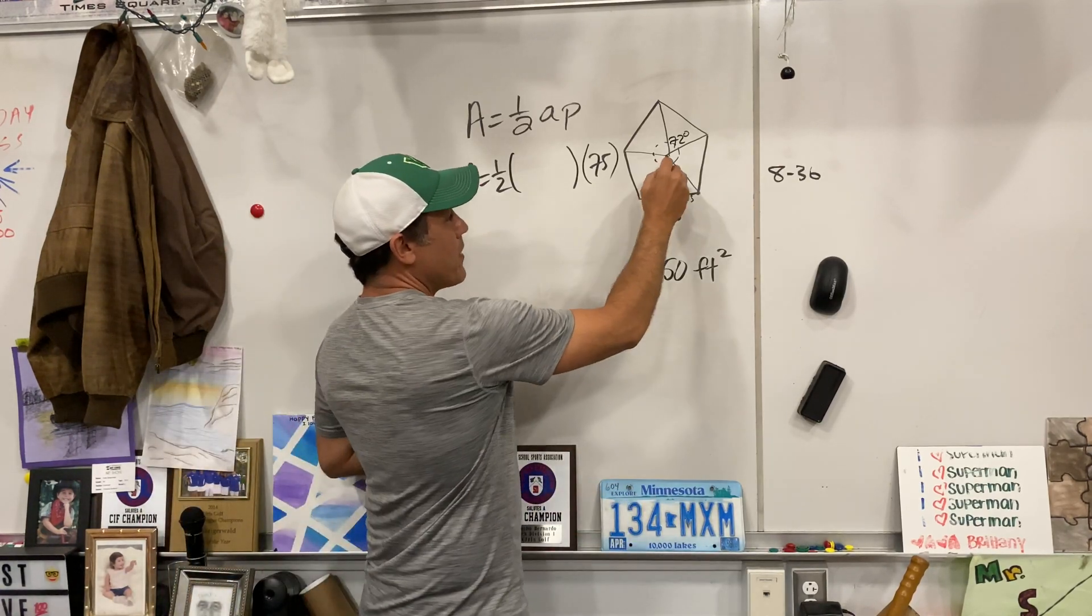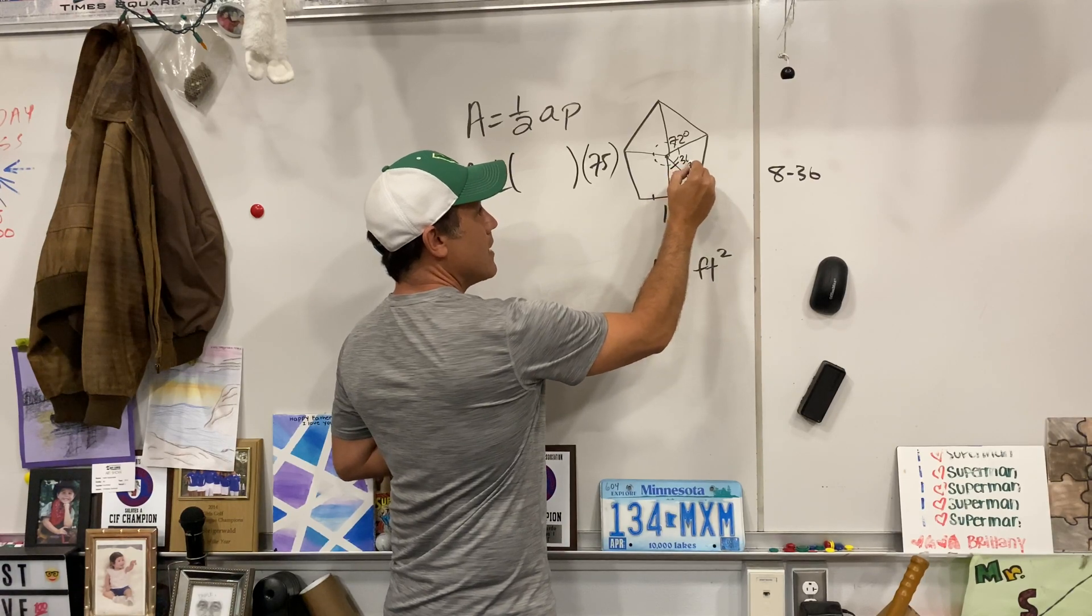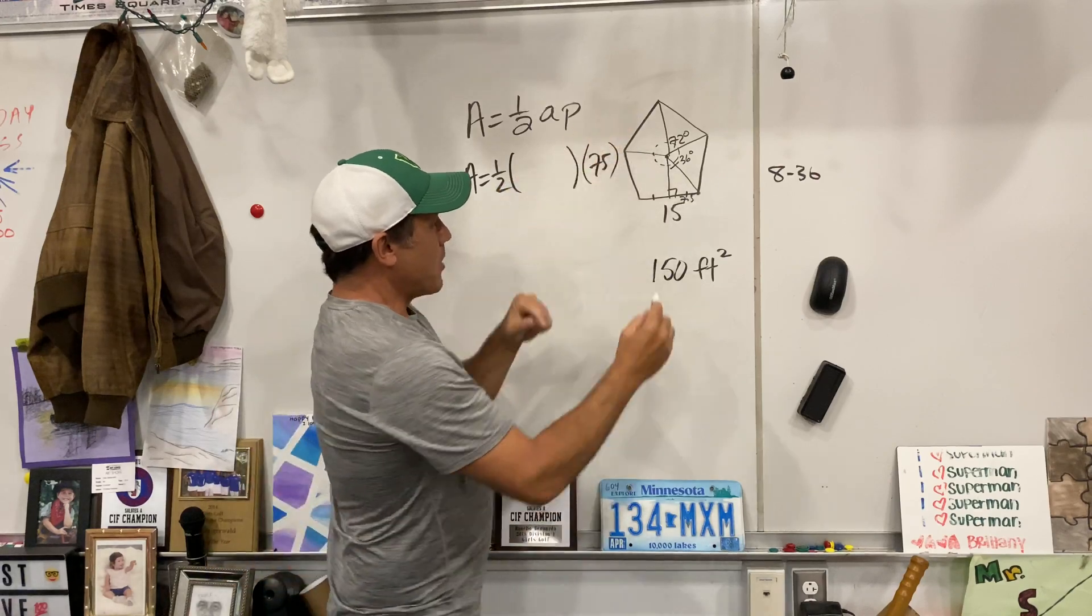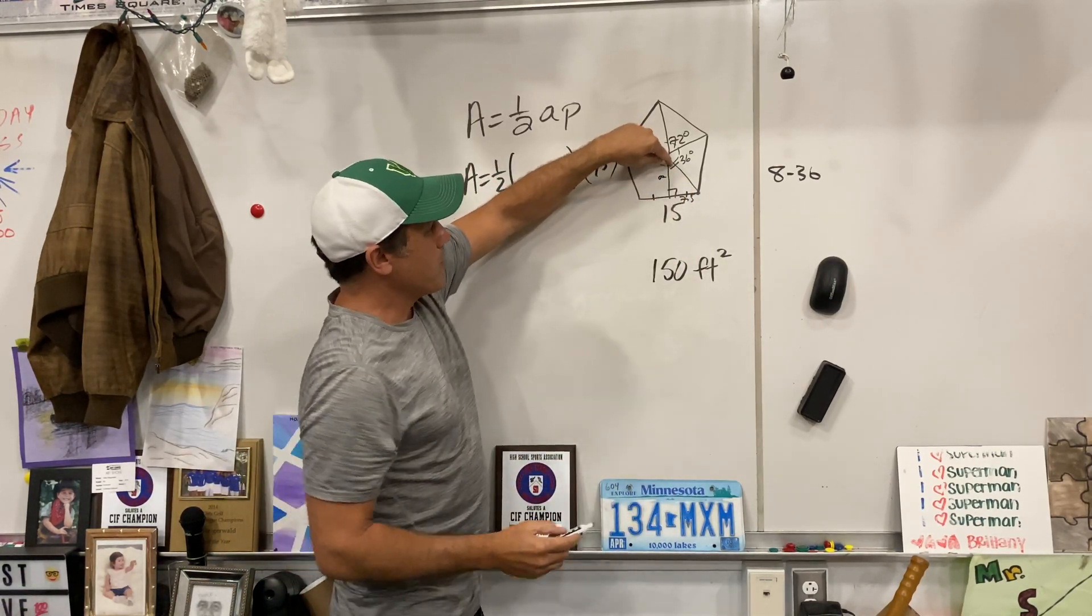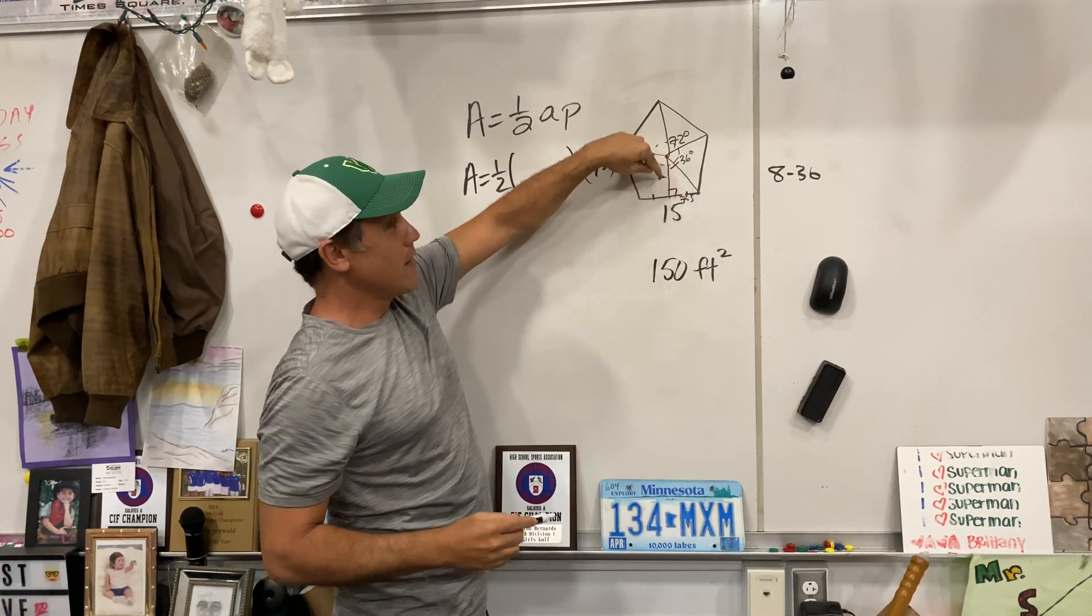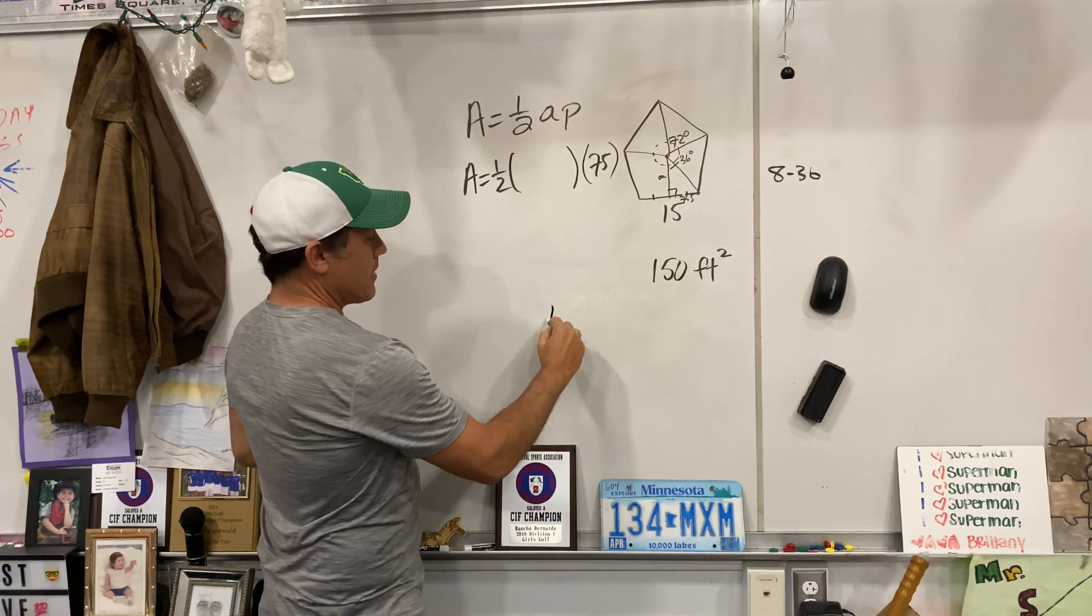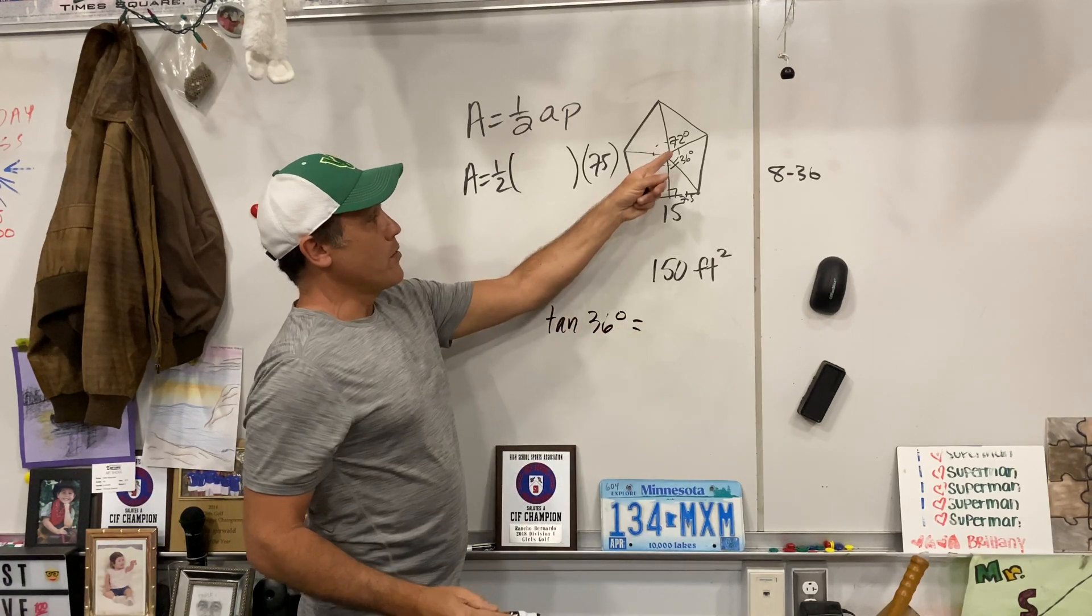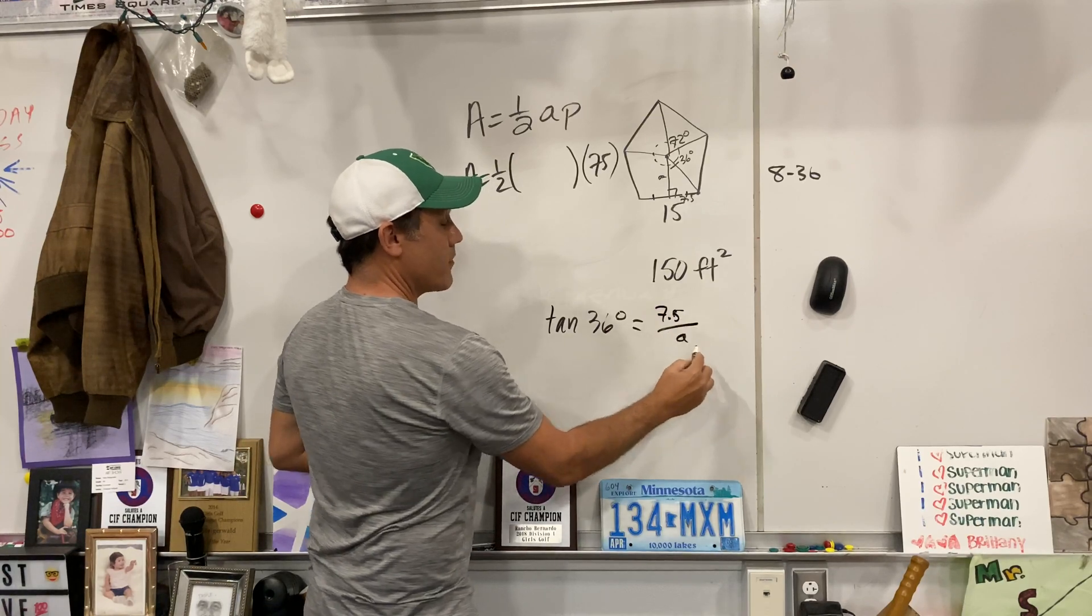But we don't want the whole angle. We're just concerned about this. So that angle is 36 degrees. We're going to need some trigonometry. Remember, we're trying to find A, my apothem. So if I put my finger right there, we have 7.5 and A. That's tangent through our alley. So maybe down here in our workspace, we're going to say the tangent of an angle, in this case tangent of 36 degrees, through our alley is equal to 7.5 over A.